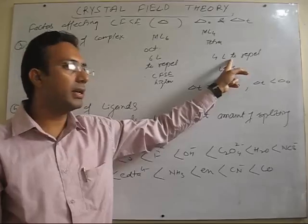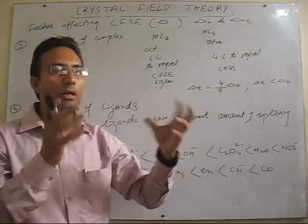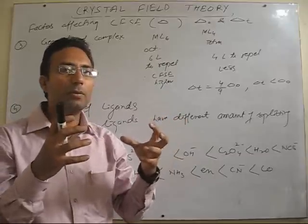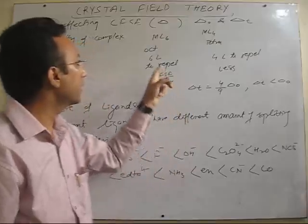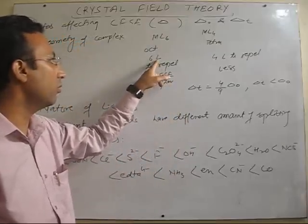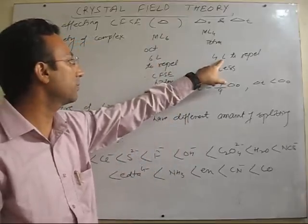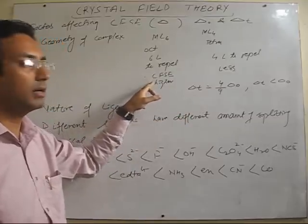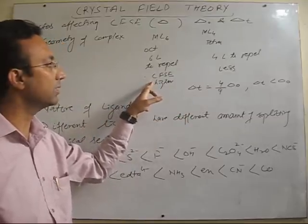But here, as they are in between the x-axis, y-axis, and z-axis, repulsion felt will be somewhat less. Moreover, six ligands will have more repulsion, four ligands will have less repulsion, and therefore, repulsion in octahedral will be more and there will be more value of splitting energy.